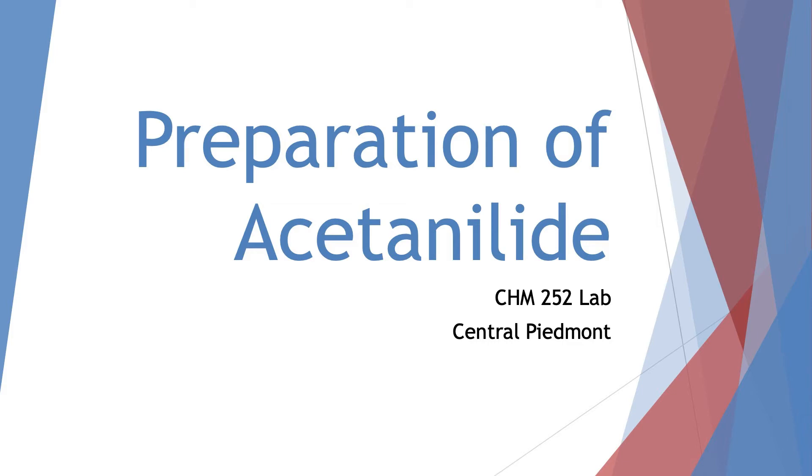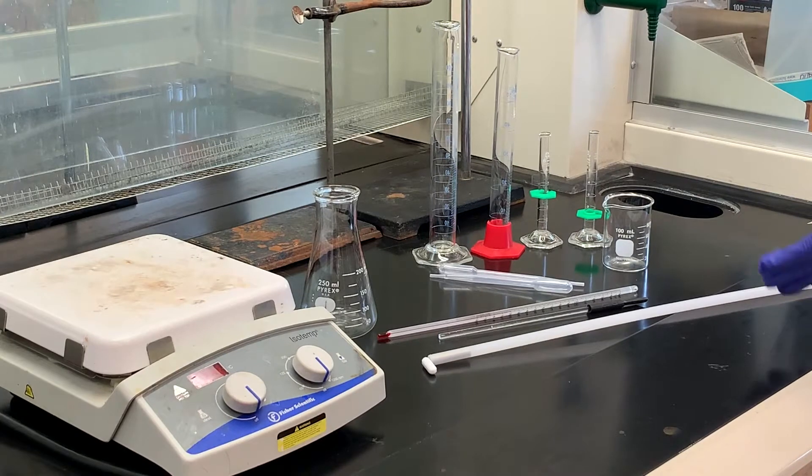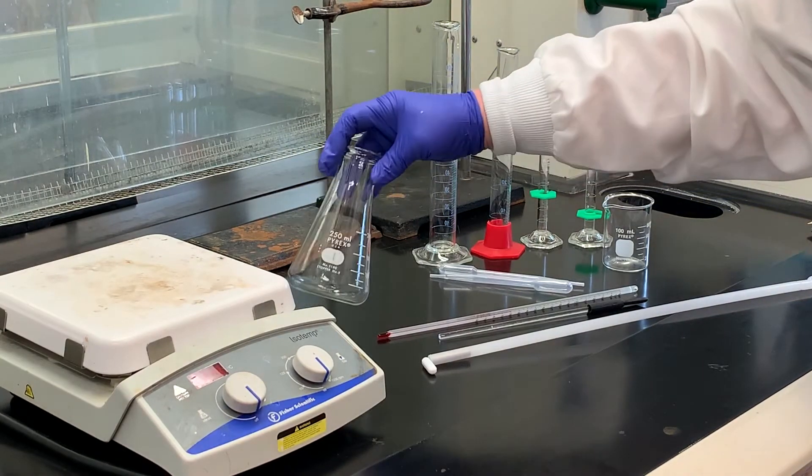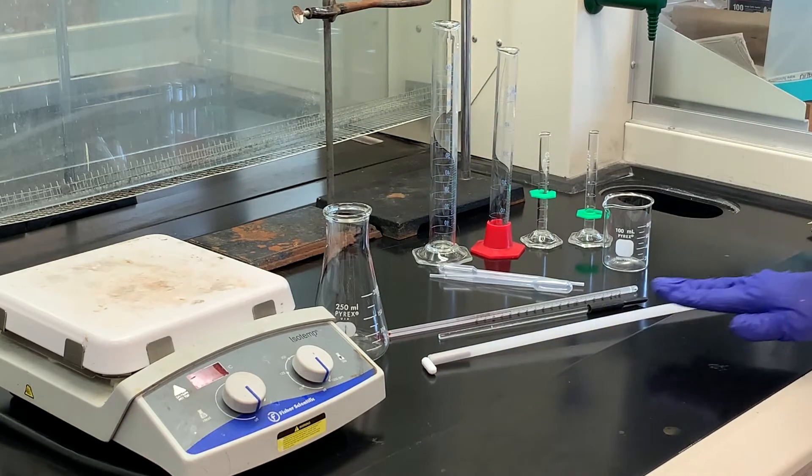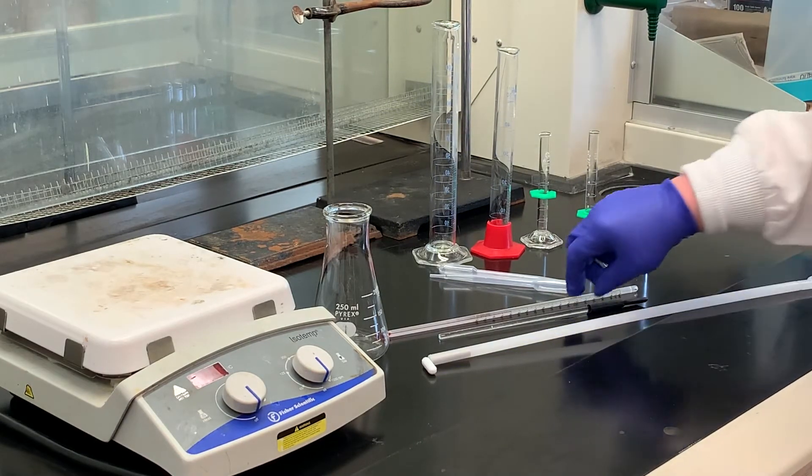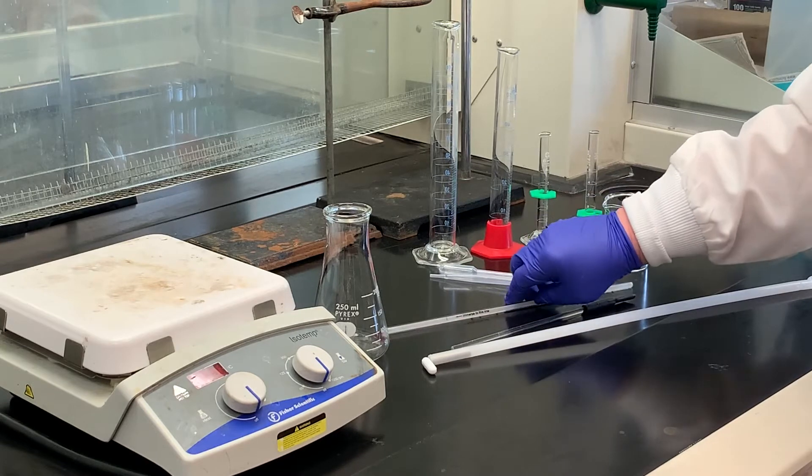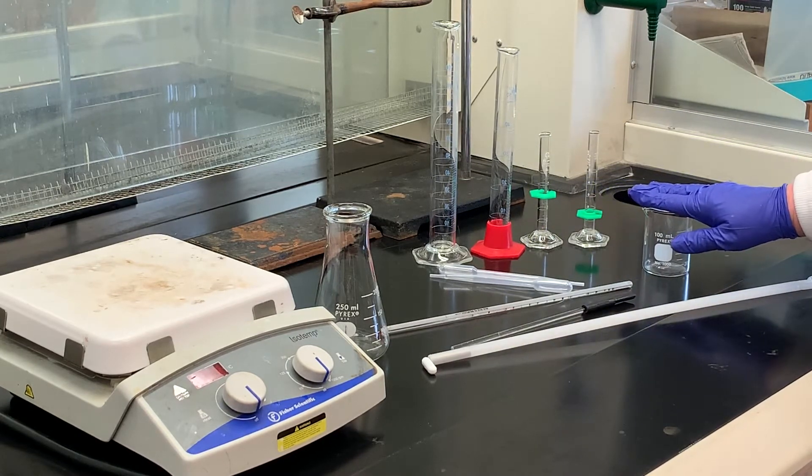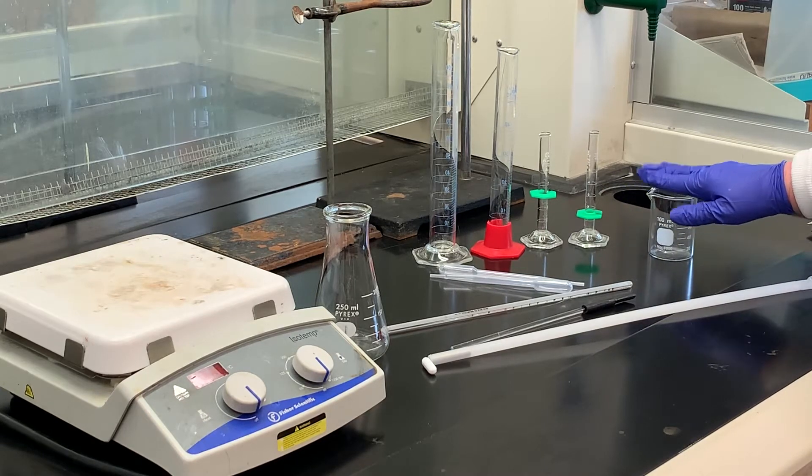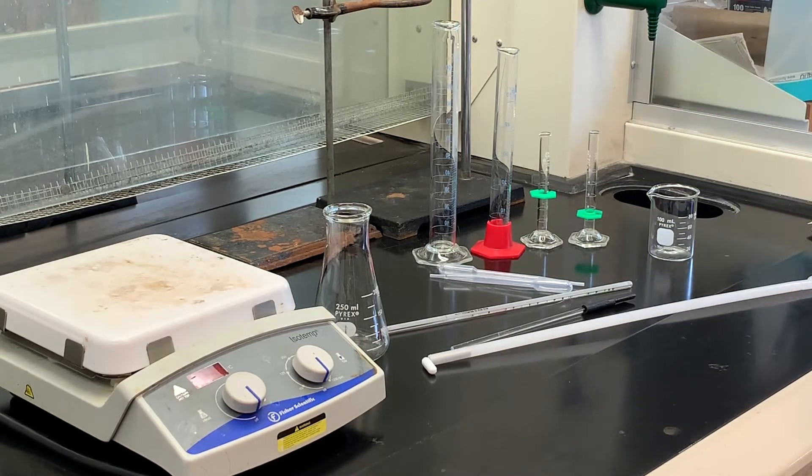Today's lab we're going to do the synthesis of acetanilide. You do not need much glassware. To carry out the reaction you'll need a 250 milliliter Erlenmeyer flask equipped with stir bar and a stir bar retriever. You'll probably need a couple of stirring rods, a thermometer, a beaker to make up the sodium acetate trihydrate solution, and various graduated cylinders.